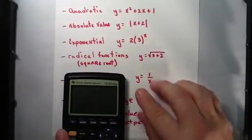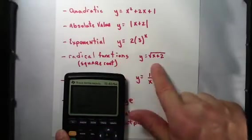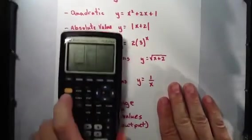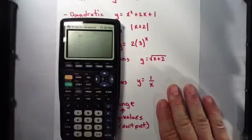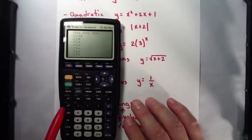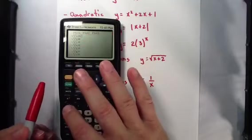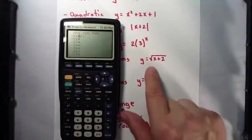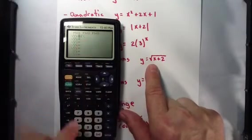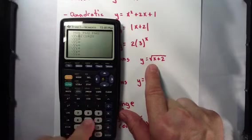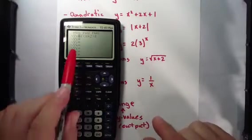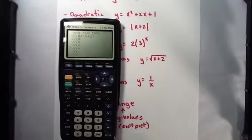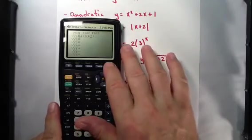Around Christmas time, we were studying radical functions. Or the square root. Clear that one. To get to the square root, we have to hit 2nd, X squared. Again, you'll see the parentheses. X plus 2. Make sure you close the parentheses so the calculator realizes that's everything underneath the radical. Hit graph.